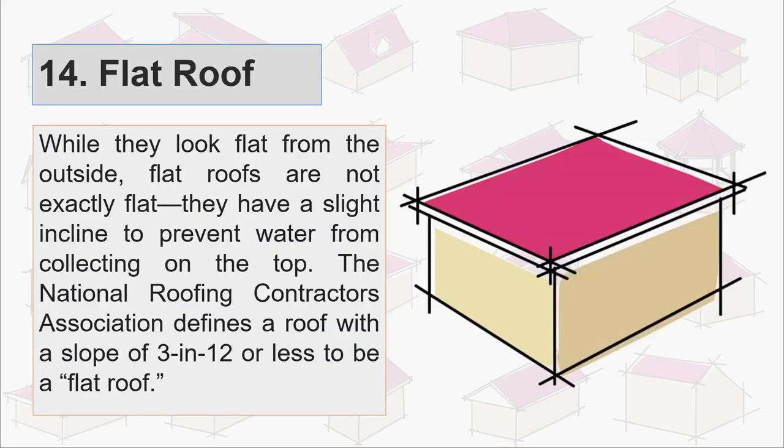Fourteenth is flat roof. While they look flat from the outside, flat roofs are not exactly flat. They have a slight incline to prevent water from collecting on the top. The National Roofing Contractor Association defines a roof with a slope of 3 and 12 or less to be a flat roof.